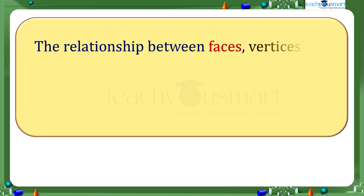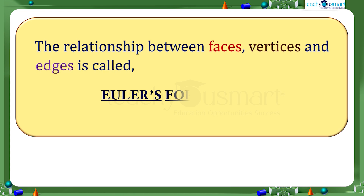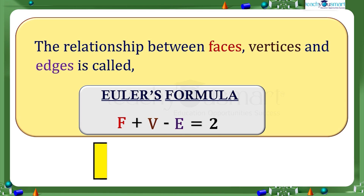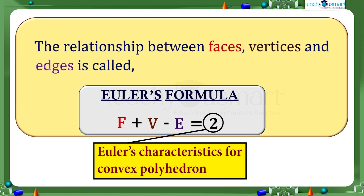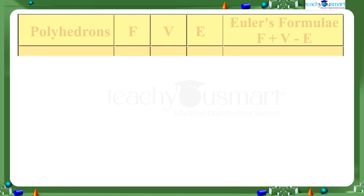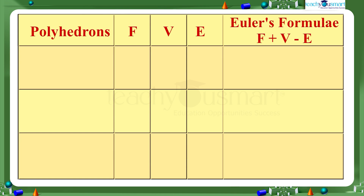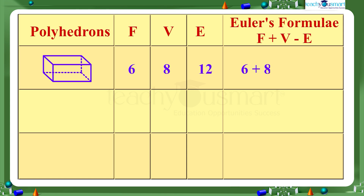This relationship between faces, vertices, and edges is called Euler's formula, and 2 is the Euler's characteristic for a convex polyhedron. Let's summarize: in the case of a cuboid, the number of faces is 6, the number of vertices is 8, the number of edges is 12, and Euler's formula gives 6 plus 8 minus 12 equals 2.